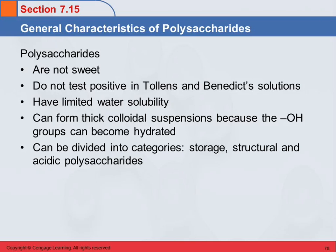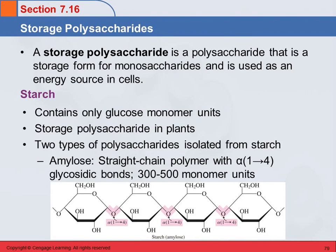We can divide polysaccharides into three basic categories: storage, structural, and acidic polysaccharides. A storage polysaccharide is one that stores energy in cells. The monosaccharides are the energy, and the polysaccharide just stores those individual monomers. One type of storage polysaccharide is starch.